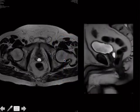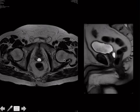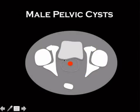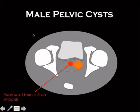The seminal vesicle cyst is off midline, but the prostate utricle cyst is right in the middle — and that's an important distinction. The seminal vesicles are on the sides; what's in the middle is the prostate. These prostate utricle cysts can communicate with the urethra, causing stagnant urine, inflammation, and increased cancer risk. Both seminal vesicle cysts and prostate utricle cysts are associated with unilateral renal agenesis.